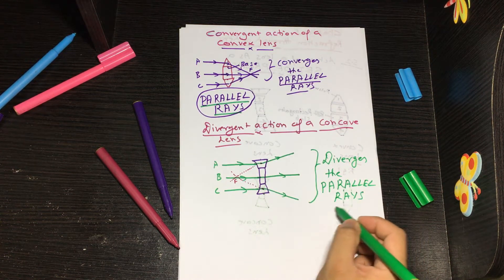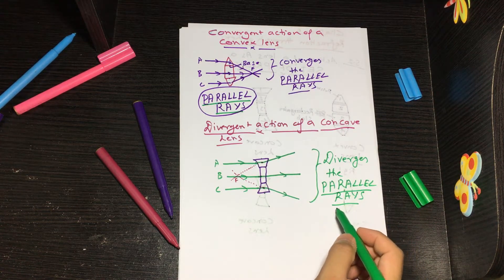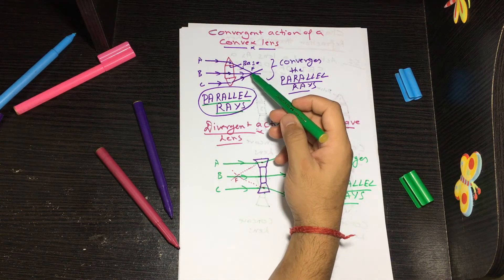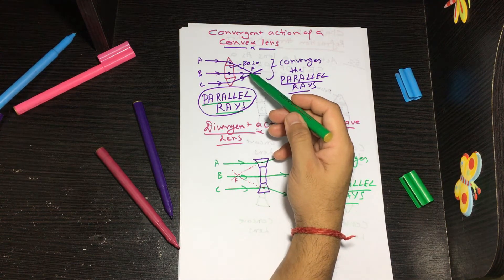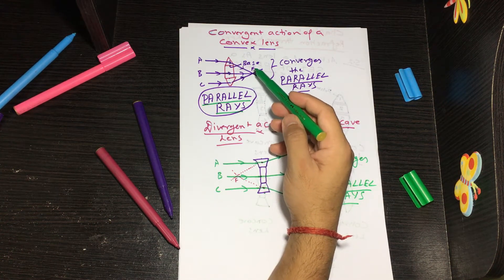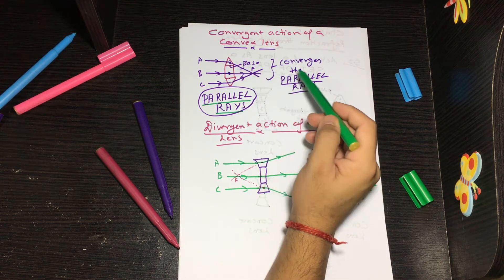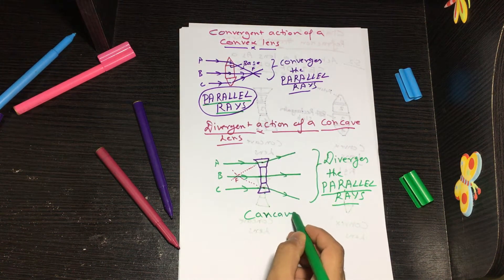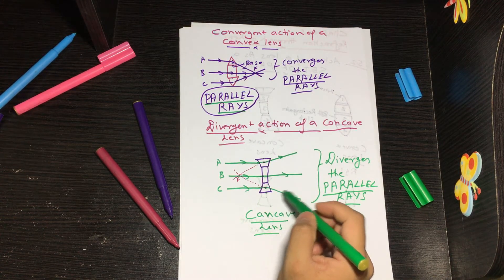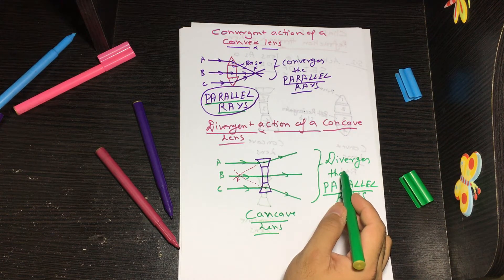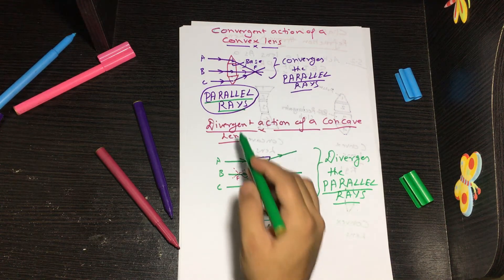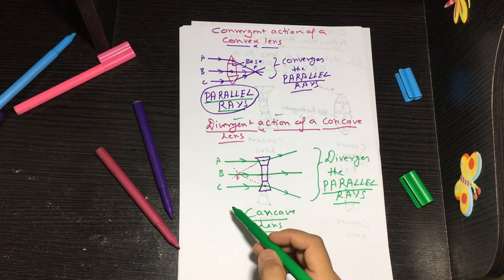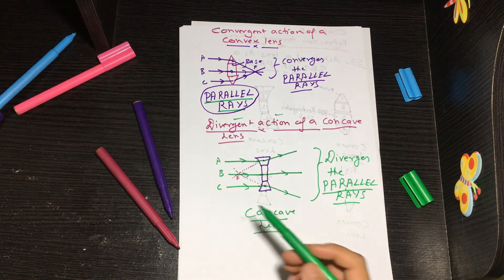Always note that I am talking only about parallel rays. In the case of convergent action of a convex lens, the rays meet at a real focal point because they always move toward the prism base. But in the case of the concave lens, the lens behaves as a diverging lens — concave lenses have a diverging action on the incident parallel rays. That's all about convergent and divergent action of convex and concave lenses.